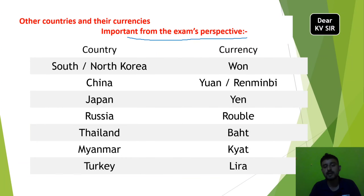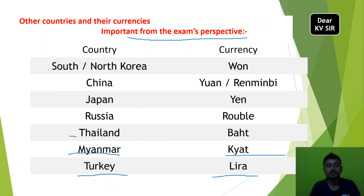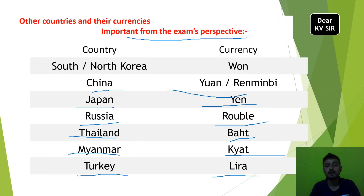Other individual currencies: Turkey uses the Lira. Myanmar uses the Kyat. Thailand uses the Baht. Russia uses the Ruble. Japan uses the Yen. China uses the Yuan. Both North Korea and South Korea use the Won.